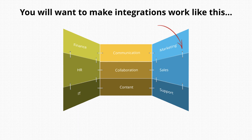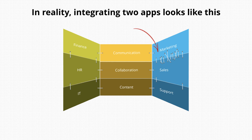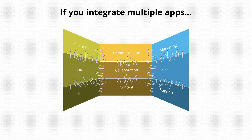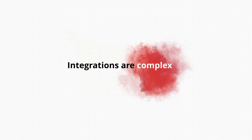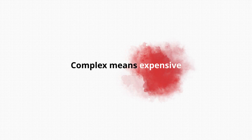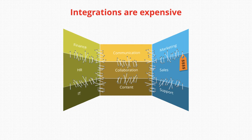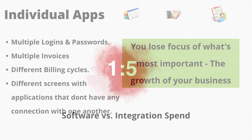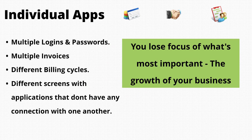Here's an example of how you'd like integration to work for you. All this looks so nice and well positioned, don't you think? In reality, integrating two softwares would look like this. And if you want to integrate multiple apps, this is how it would look. Integration is complex as I mentioned earlier, and complex comes with a price tag. So you wouldn't want to be spending 1 rupee to buy a software but 5 rupees to integrate them. You have to deal with multiple accounts, multiple logins and passwords, multiple invoices and different billing cycles, and most importantly, multiple screens with applications that don't communicate with one another. In the bargain, you lose focus on what's most important — the growth of your business.